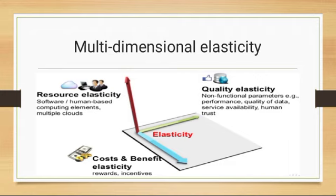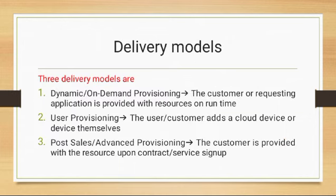In another direction, it consists of cost and benefit elasticity. Delivery models: Three delivery models are dynamic or on-demand provisioning, user provisioning and post-scales or advanced provisioning.